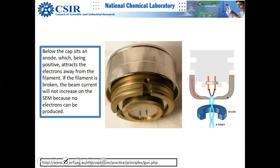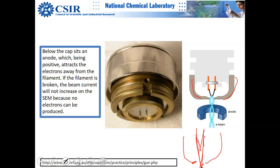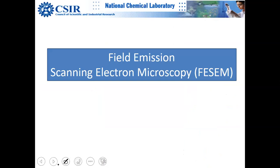The Wehnelt cap is negatively charged. Electrons when ejected go in all directions. When you apply a negative bias, they are repelled and collimate to a point. Basically they form a crossover point. After that you apply a positive anode voltage to accelerate them.